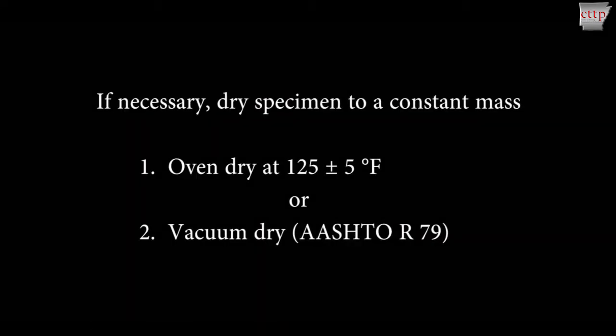If necessary, oven dry the specimen to a constant mass at 125 plus or minus 5 degrees Fahrenheit, or vacuum dry according to AASHTO R79. Recently compacted laboratory specimens that have not been exposed to moisture do not require drying. Cool the specimen to 77 plus or minus 9 degrees Fahrenheit.